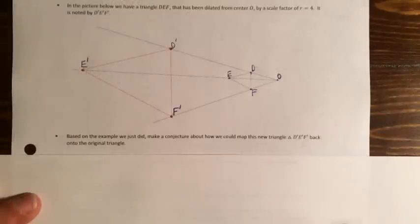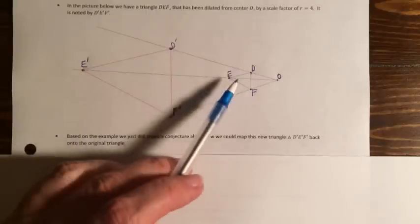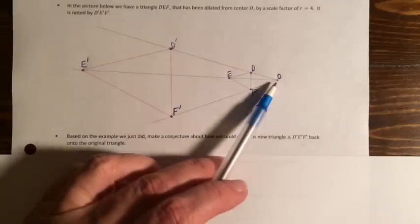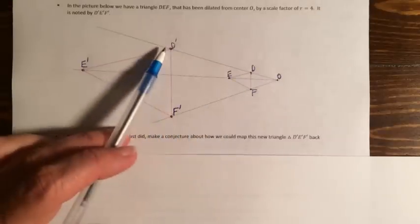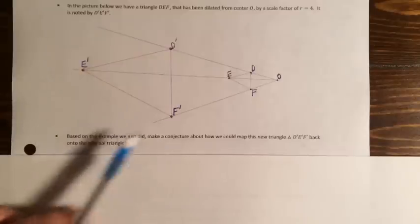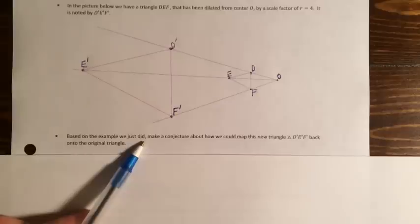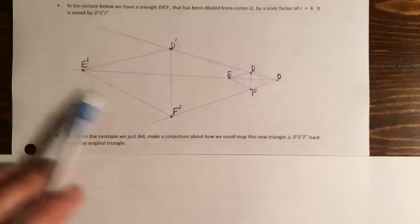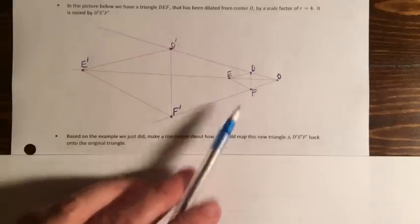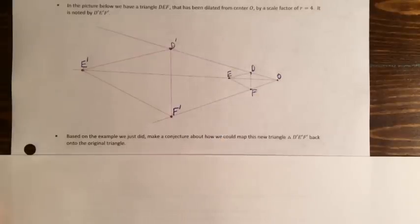Here's another example. In the picture below, we have triangle DEF that has been dilated from center O by a scale factor of 4, and the dilated triangle is D prime, E prime, F prime. Based on the example we just did with scale factor one third, make a conjecture about how we could map triangle D prime, E prime, F prime back onto the original triangle. What is the difference between this example and the last one?